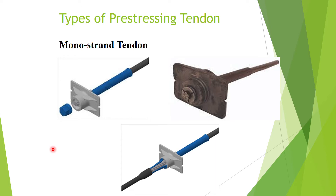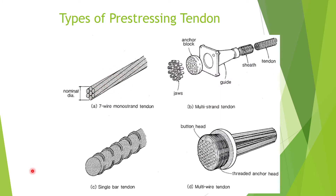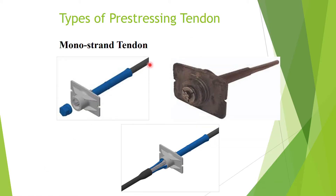Looking in more detail at the mono-strand tendon: we have only one seven-wire mono-strand. The cross-section of the seven-wire strand is visible, along with the anchor block and locking devices called wedges, which are made of high-strength steel. If you want to join two tendons, there is another type of anchorage device that can connect two mono-strands together to form a continuous strand.